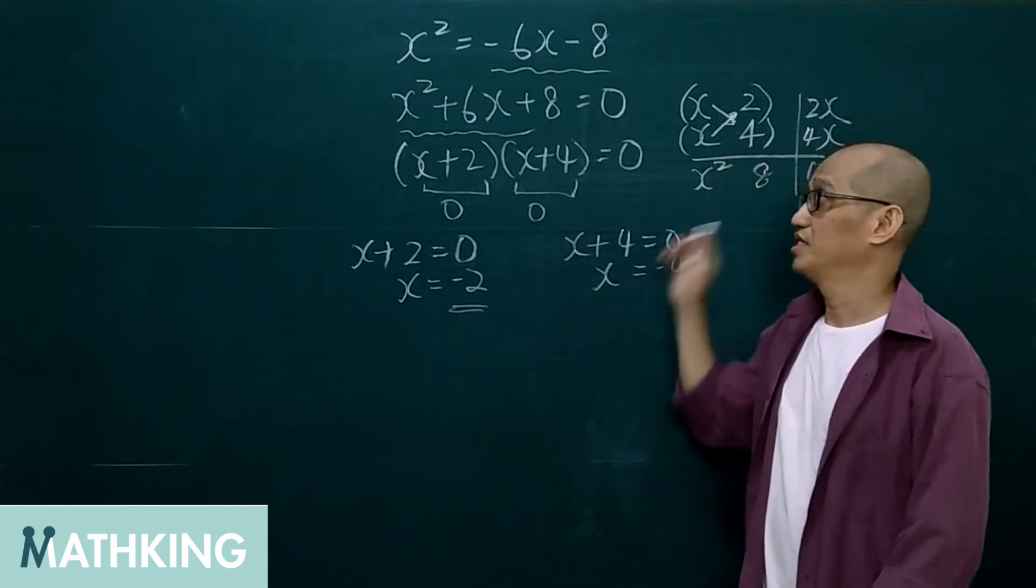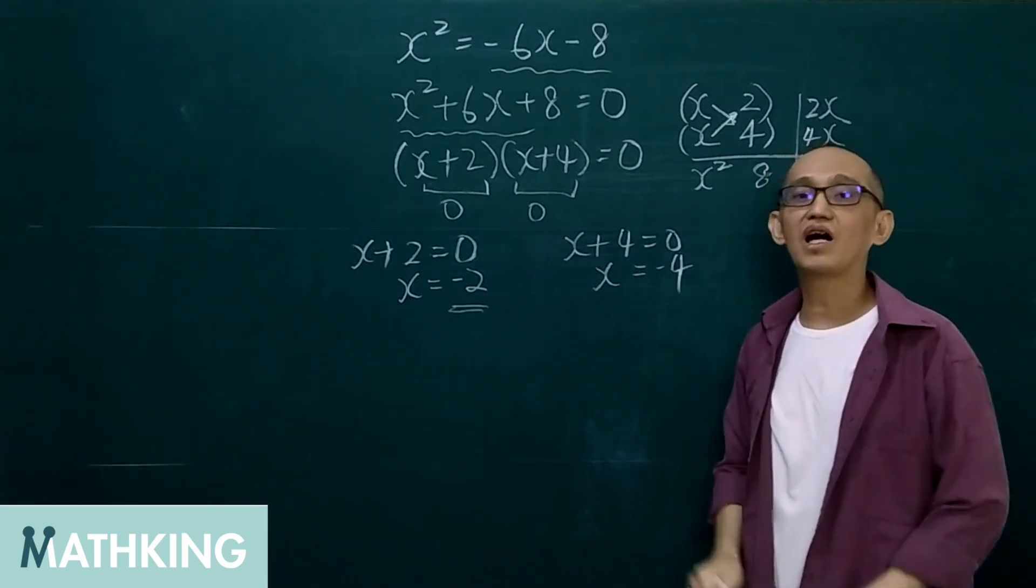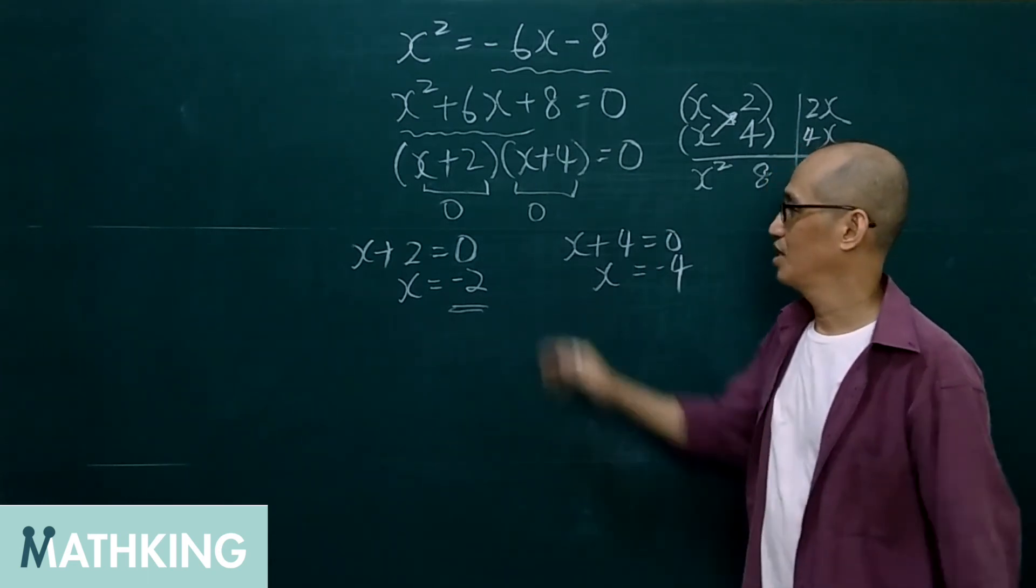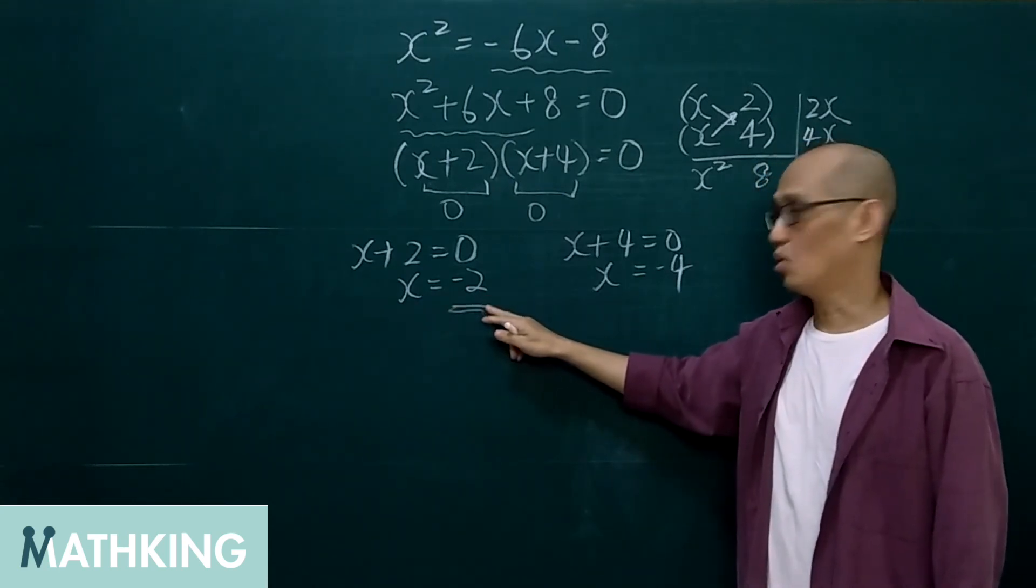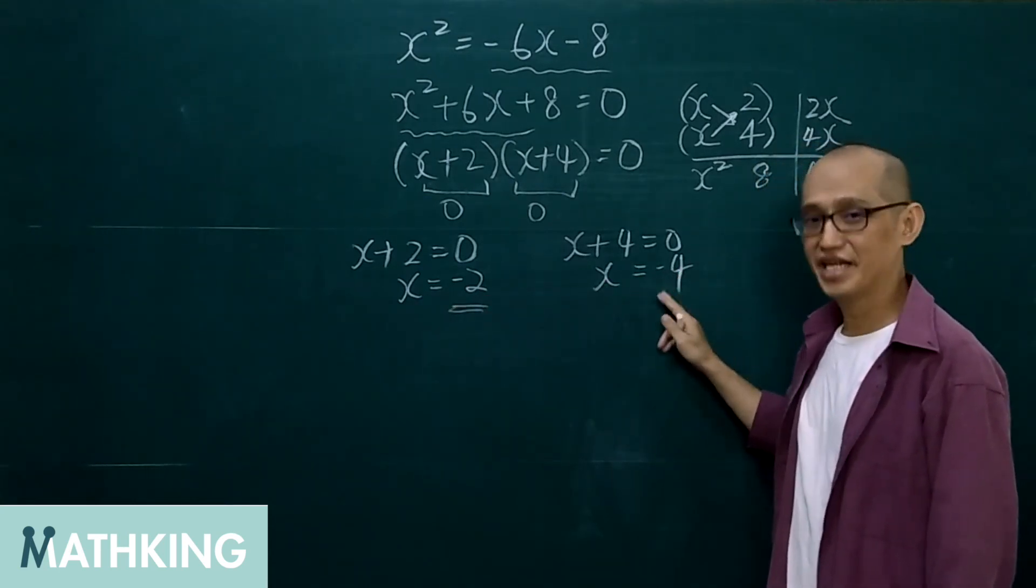So, for this one, this quadratic equation, there are two answers, which is x equals negative 2, or x equals negative 4.